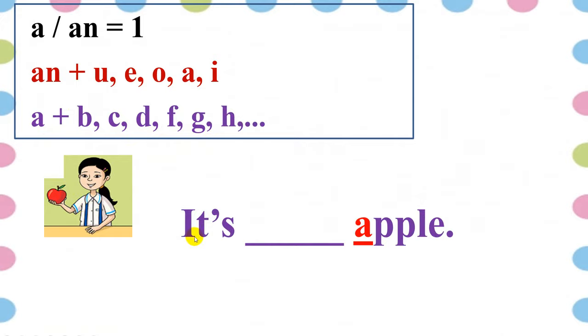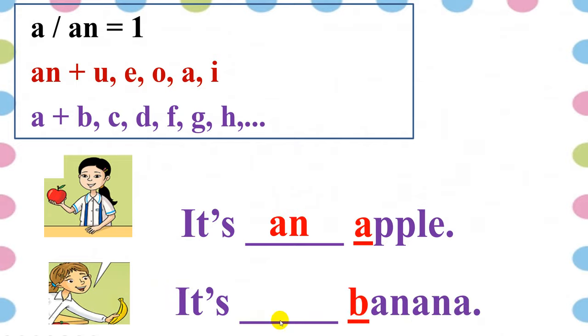Look at this picture. It's a, or an, apple. Can you see the word apple begins with the vowel A? So, you write. It's an apple. What's this? Can you see the word banana? Begins with the consonant B. So, you write. It's a banana.